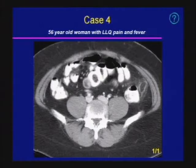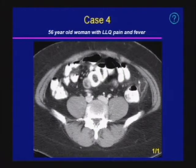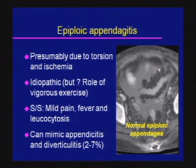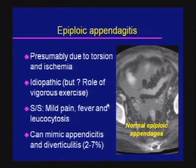Case four: we see a fatty mass with surrounding hyperdense enhancement and pericolonic inflammation in the left lower quadrant. This location is classic for epiploic appendagitis. Normal epiploic appendages are fatty fingers arising off the intraperitoneal portions of the colon. It is thought that appendagitis is related to twisting or torsion leading to infarct of the appendage, and exercise may contribute. There is no known definitive cause.